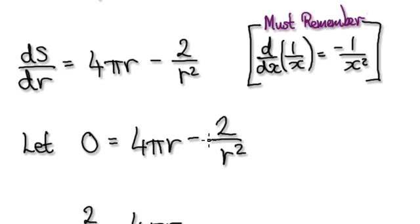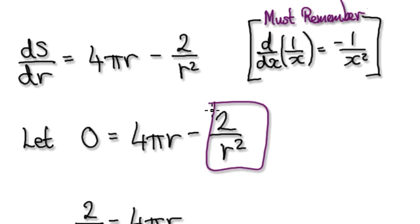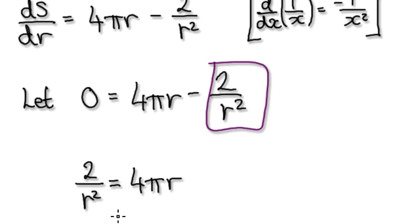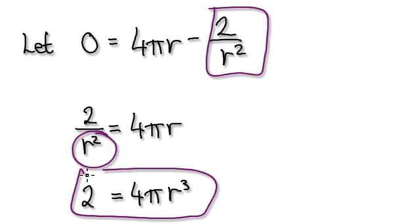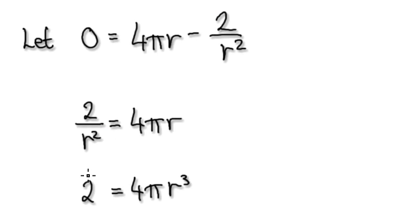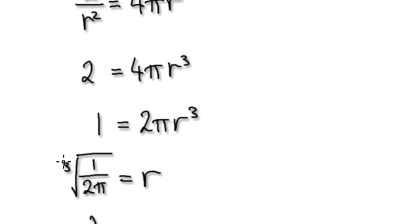Now it's just a matter of working out R. Add 2/r² to both sides, then times both sides by r², and you get r = ³√(1/2π).